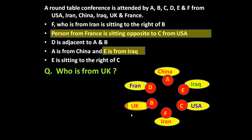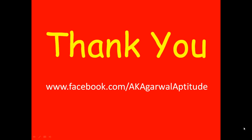Once you have this circular arrangement, you can answer any question. For example, another question may be: who is sitting opposite to China? The answer is Iran. Iraq is surrounded by China and USA. Like this, there may be one, two, three, four, or five questions. Once you have this arrangement, you can answer all such questions without any problem. Thank you very much for watching this video. You can also follow me on Facebook.